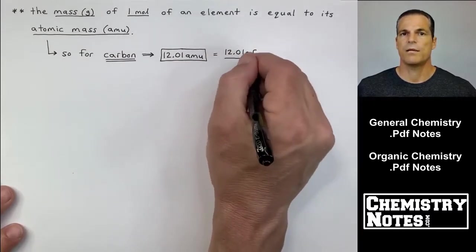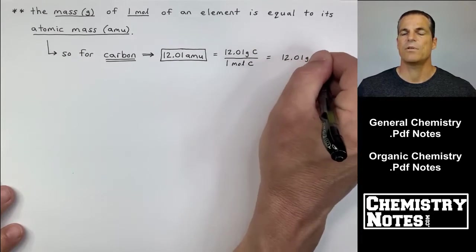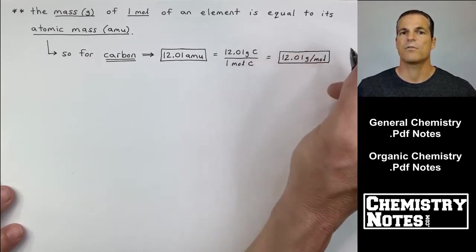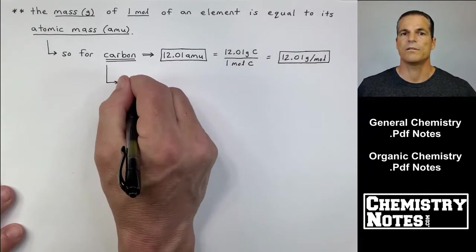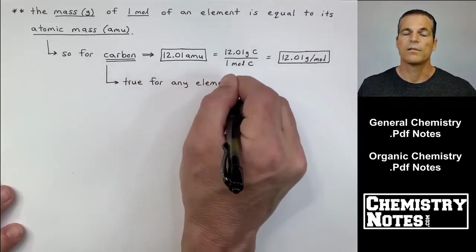So for carbon, the average atomic mass for carbon is 12.01 AMU. Well, that's equal to the mass in grams, 12.01 grams, divided by one mole of carbon.